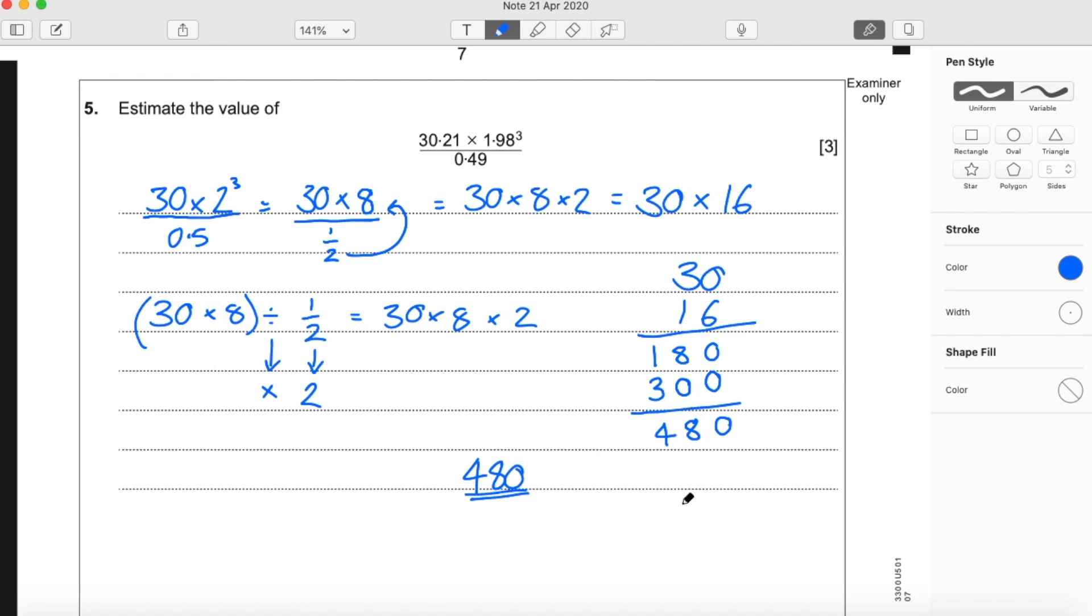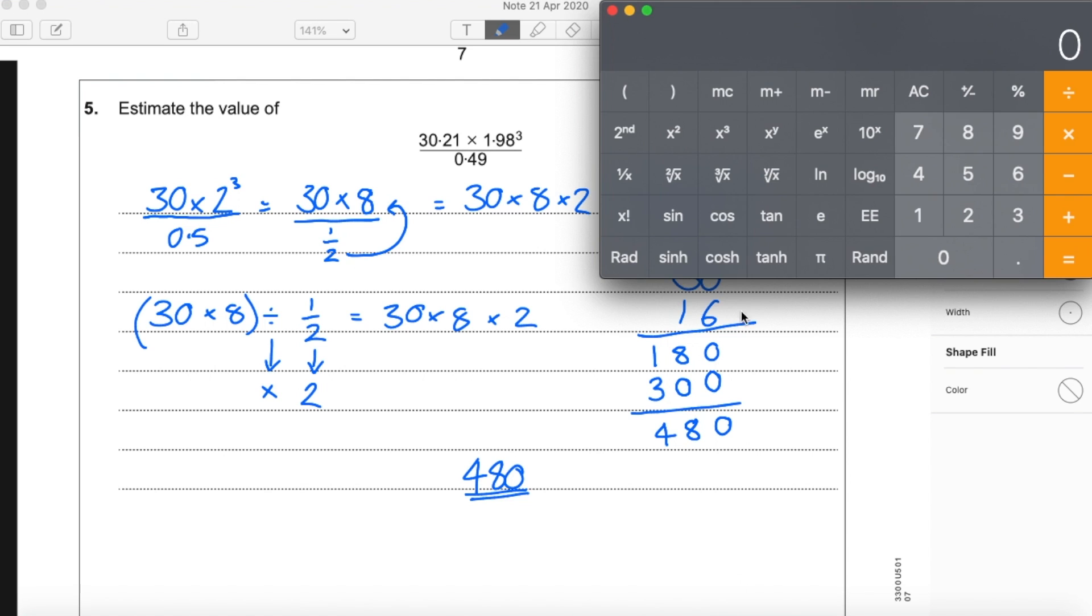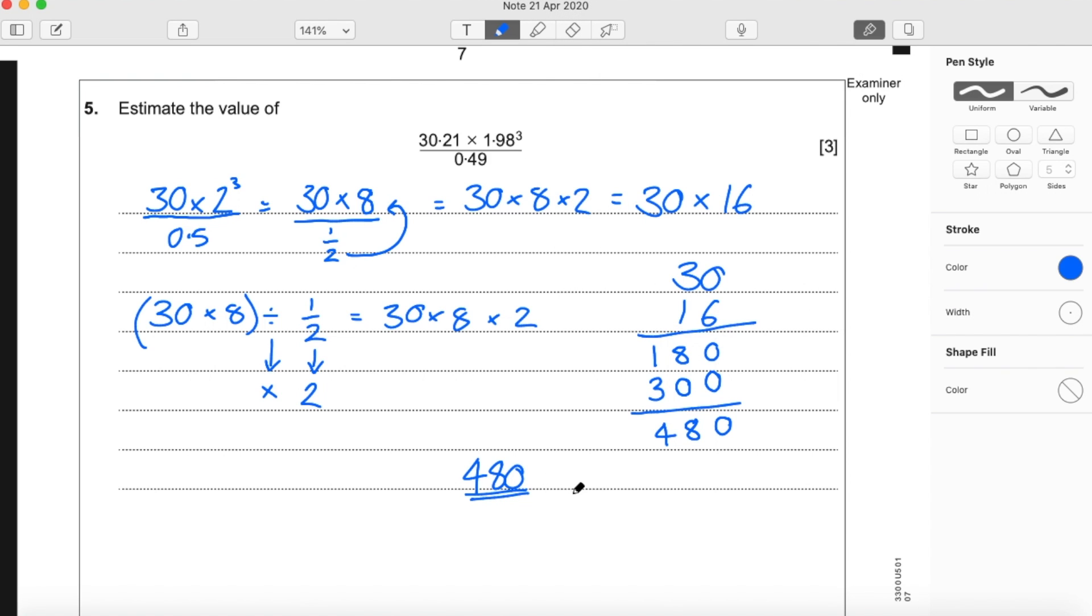So there's the question. I'm just going to prove it to you now. See how close we were with our calculator. So 1.98 cubed times by 30.21 divided by 0.49. 478. So very close to our answer 480. So we know our estimate is correct.